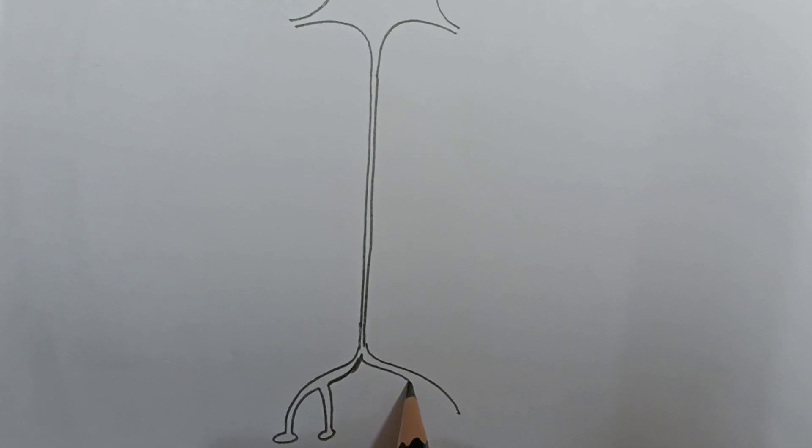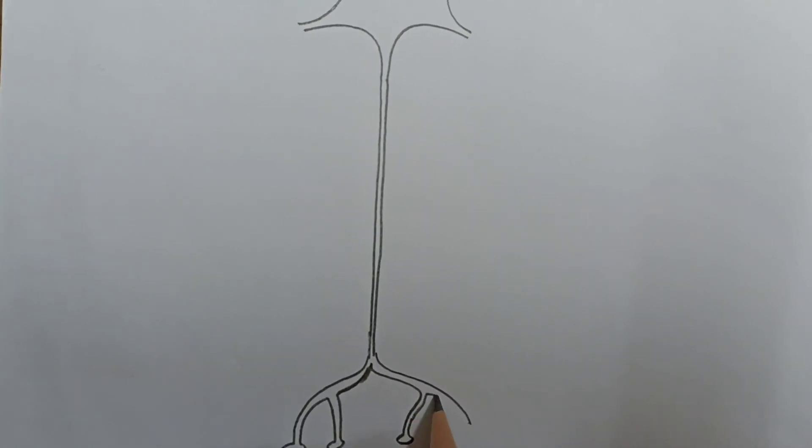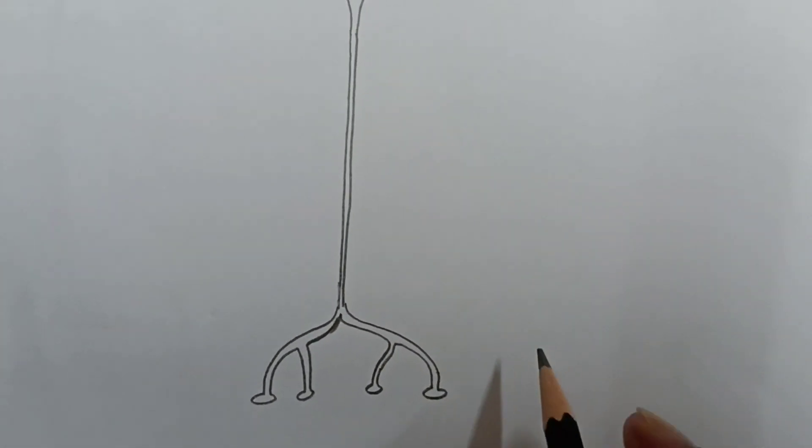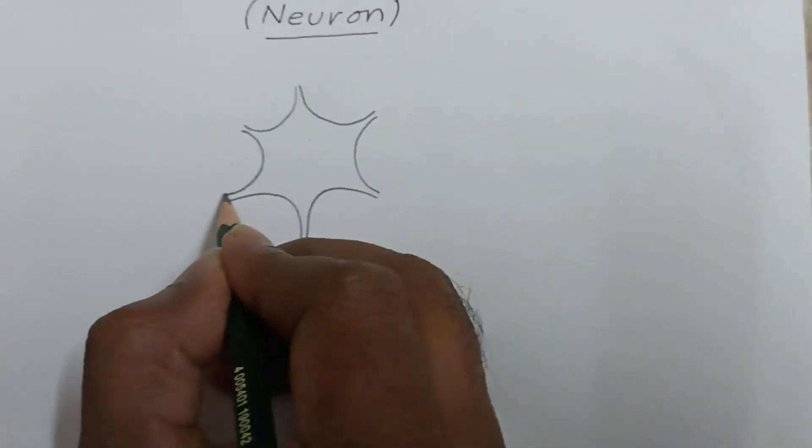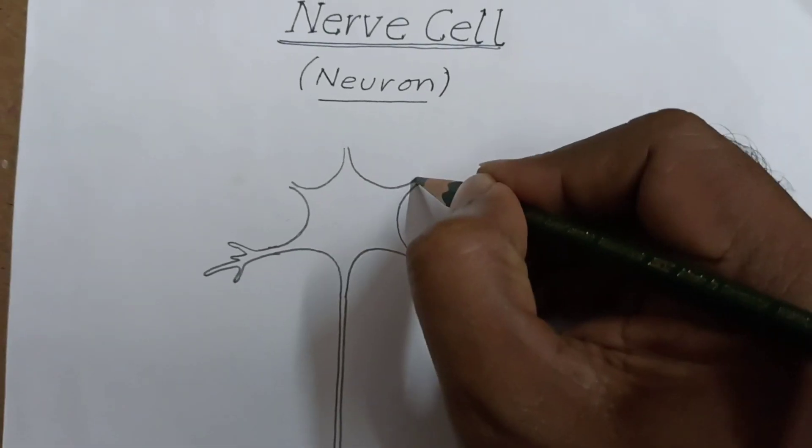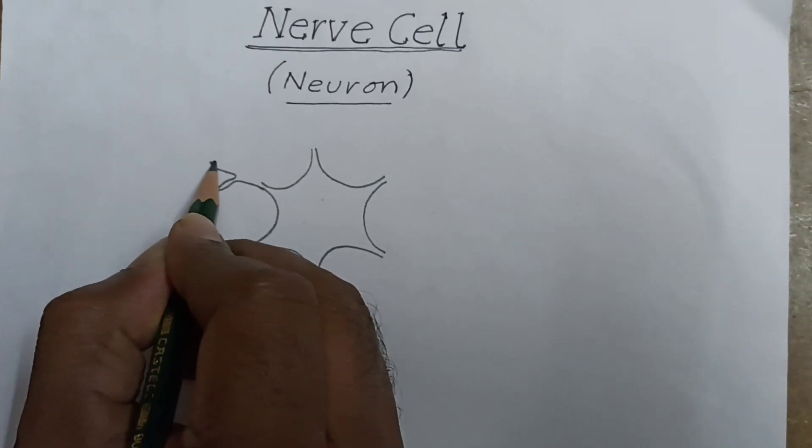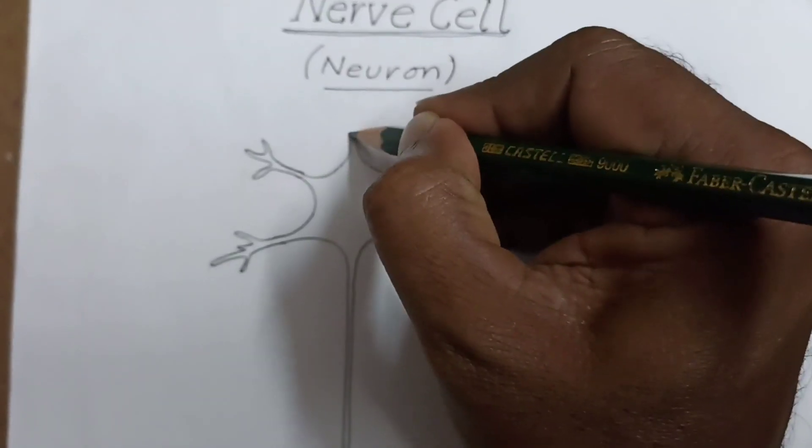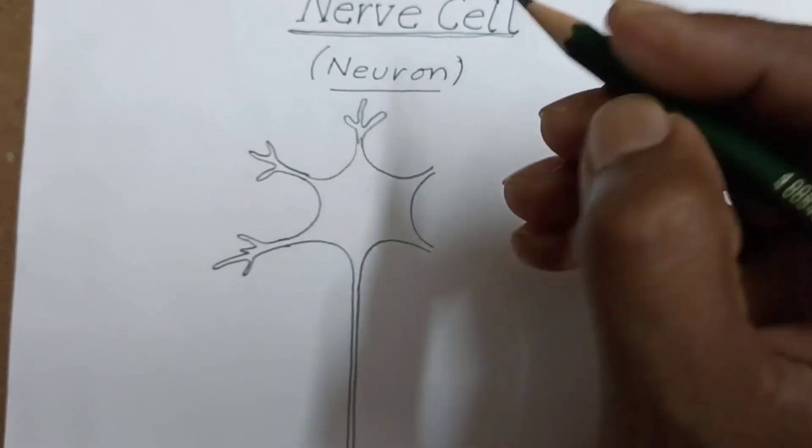These are axon terminals and synaptic knobs. Okay good. Now you draw dendrite like this. Simply draw like this.